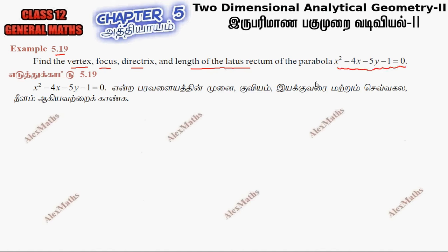This is the standard form to convert. The x term is here — that is, x squared minus 4x. Equal to the y term and the constant number is here.